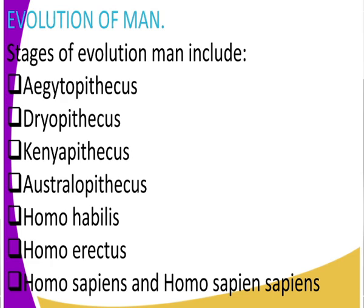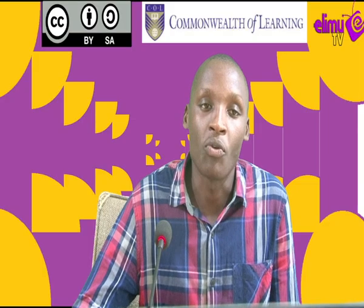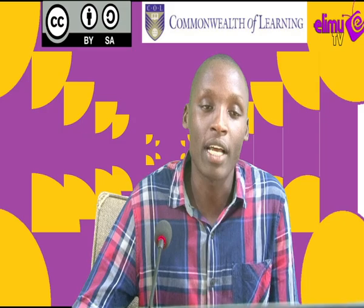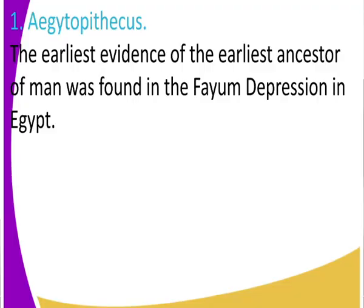We will look at these stages of evolution one by one. Today, we get to look at Aegipithecus as the first stage of evolution of man — where it was first found and what are some of the features or characteristics of Aegipithecus.